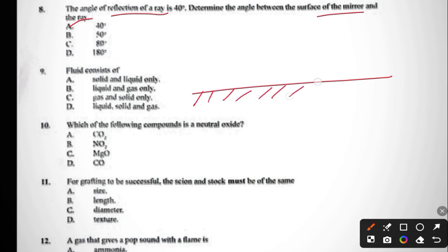The angle of reflection of a ray is 40 degrees. Determine the angle between the surface of the mirror and the ray. What it wants is actually the angle of incidence. So the angle of incidence is also 40 degrees. Question nine: fluids consist of solid and liquid only, liquid and gas only, gas and solid, or liquid, solid, and gas.